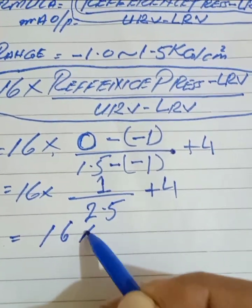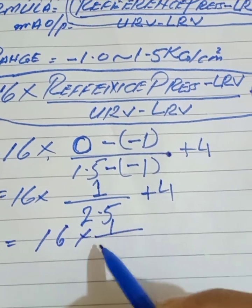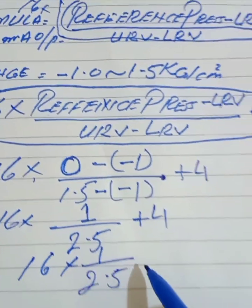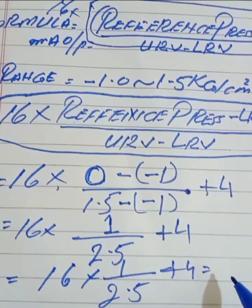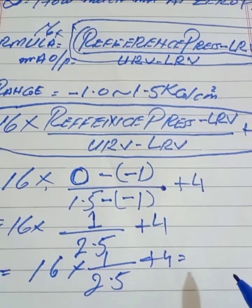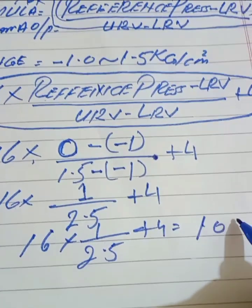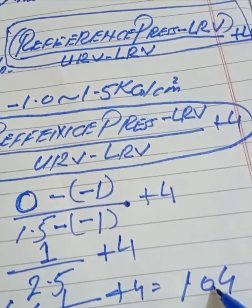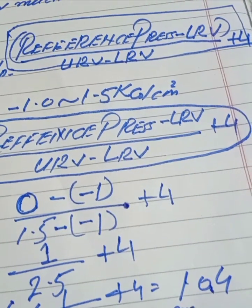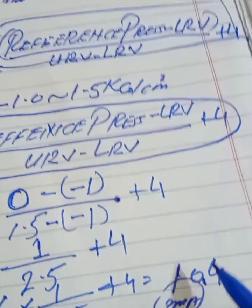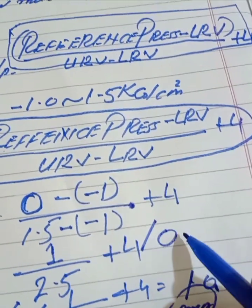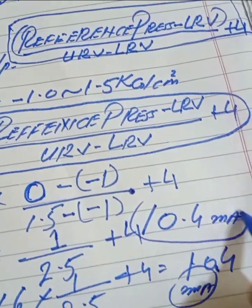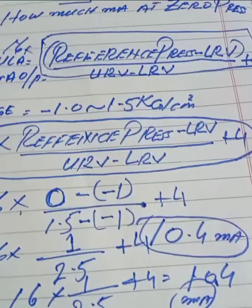So the result is: 16 into (1 over 2.5) plus 4, which gives us 10.4 milliamps. The answer is 10.4 milliamps. This is our transmitter output at zero pressure.